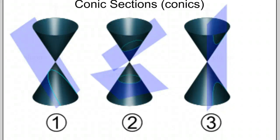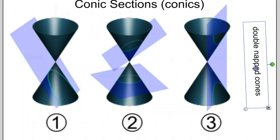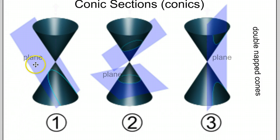Hello class. Today we're going to start this video on the new unit 15 on conic sections. Conic sections are basically types of curves that are based off of the intersection of two objects — the intersection of double-naped cones. As you can see here we have three different copies of double-naped cones, which means their cones intersect at the vertex, and the right cylindrical cones, and then the intersection of the cones and planes. As you can see here we have light purple rectangular shapes that represent planes.